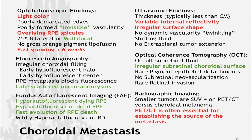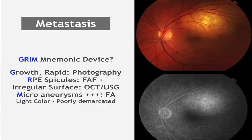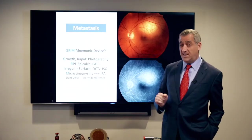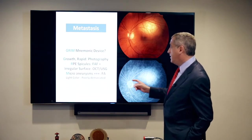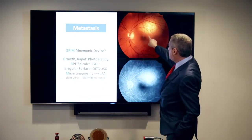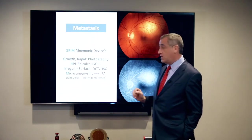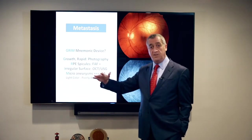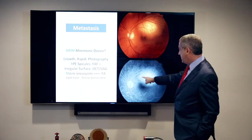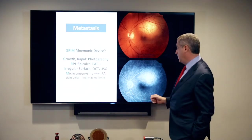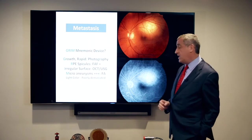Also, PET-CT can be quite important. I came up with the mnemonic GRIM for metastasis — that probably suits the process. Growth: much more rapid than a choroidal melanoma, best documented by photography. RPE spicules are fundus autofluorescent positive. Irregular surface, seen on OCT or ultrasound. And microaneurysms — lots of little dots — are very common with metastatic choroidal tumors, unlike melanomas where they exist in much lesser numbers.